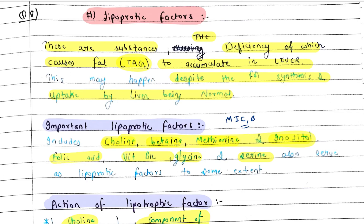But now we will continue with this video. Today we will learn about Lipotropic Factors. Why are we going to learn about it? Because these can come in 3-mark and 5-mark questions. In 3-mark questions there are more chances in finals, and in 5-mark questions there are more chances in internals. So now we will talk about it easily, and you will be able to remember it.